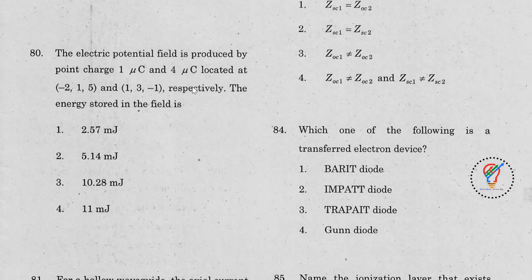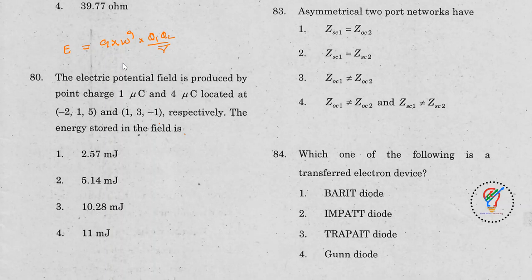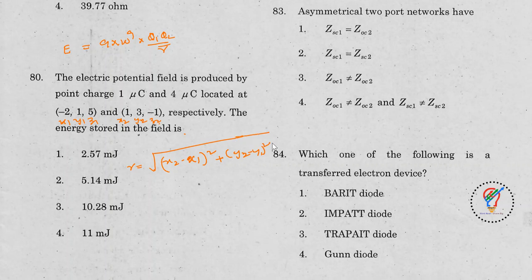Question 80: The electric potential field is produced by point charges of 1 µC and 4 µC located at (−2, 1, 5) and (1, 3, −1) respectively. The energy stored is E = 9×10⁹ × Q1 × Q2 / r. We need to find r using the distance formula: r = √((x2−x1)² + (y2−y1)² + (z2−z1)²).